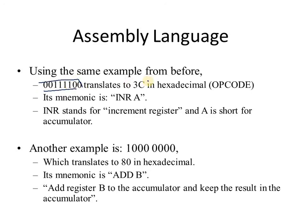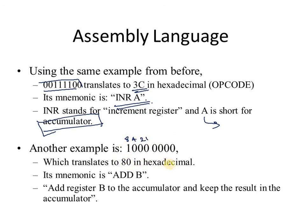As a summary example: the binary number 00111100, converted to hexadecimal is 3C, which is the opcode. Its mnemonic is INR A — increment the accumulator. INR stands for increment register and A is short for accumulator. Another example: binary 10000000 equals 80H, and its mnemonic is ADD B — add the value of register B to the accumulator and keep the result in the accumulator.